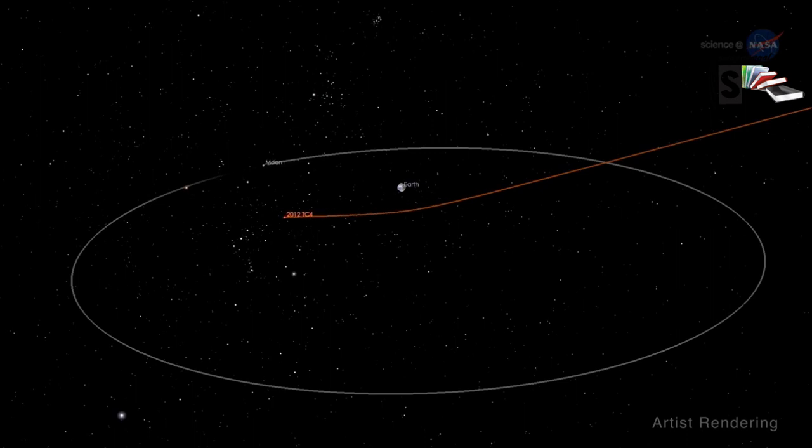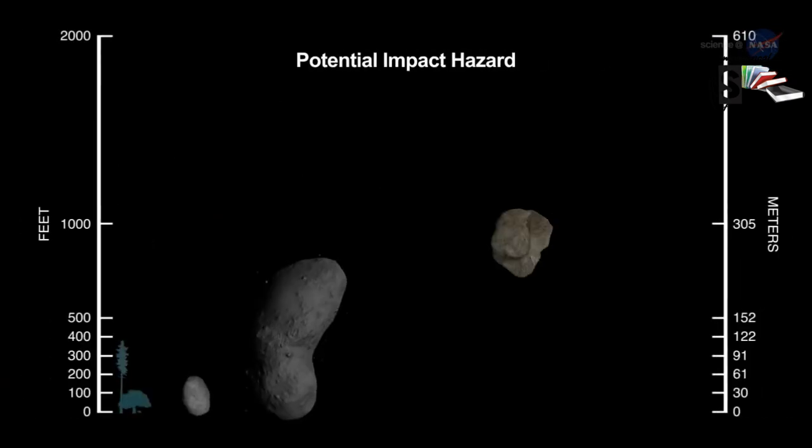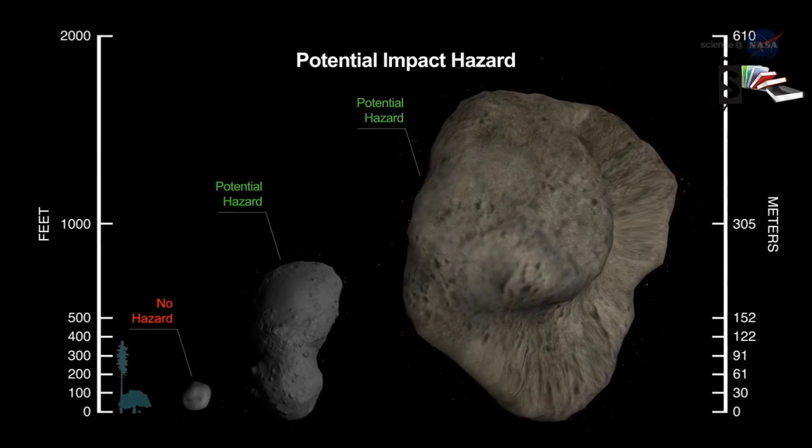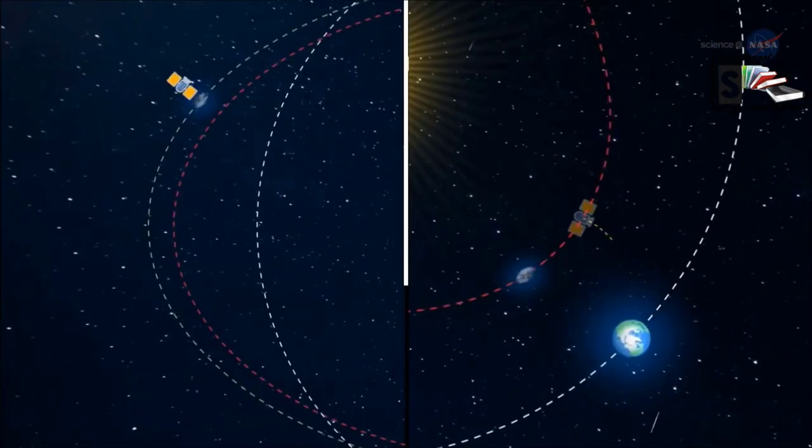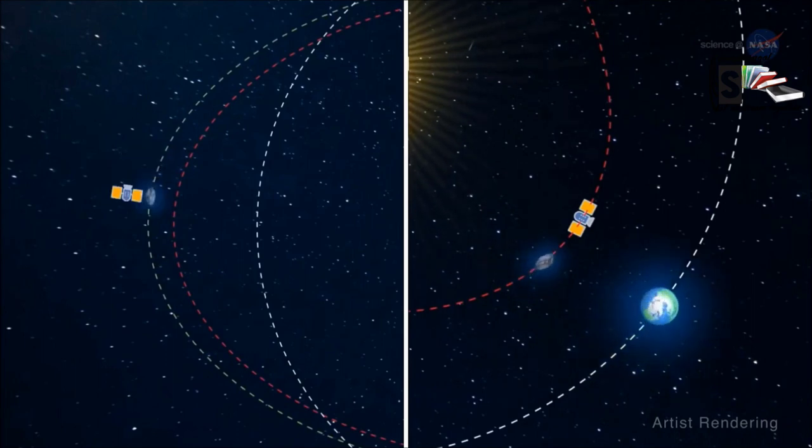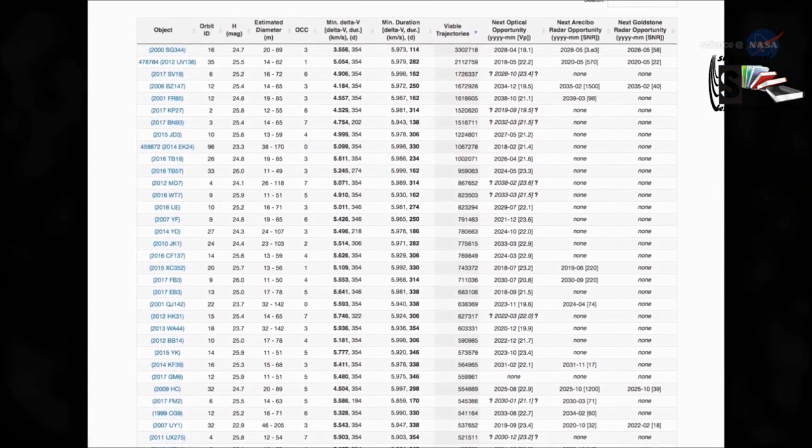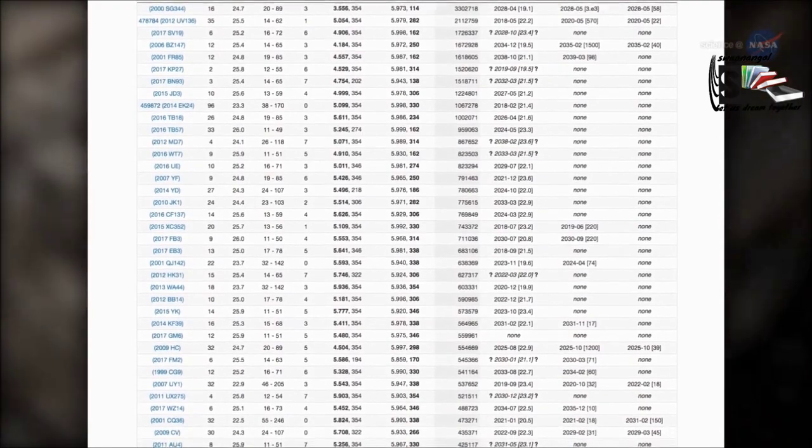As of June 19, 2013, 10,003 near-Earth asteroids are known, and the number over 1 kilometer in diameter is thought to be 861, with 1,409 classified as potentially hazardous asteroids, those that could pose a threat to Earth. Asteroids become darker and redder due to space weathering. However, evidence suggests most of the color change occurs rapidly.